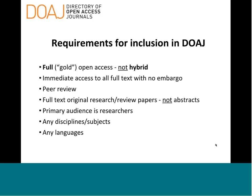We want all the content in DOAJ to be peer reviewed — as part of our drive towards ensuring quality in the system, we now require that a journal undergoes peer review. Our journals should also publish original research or review papers in full text — we don't accept abstract-only publications. The primary audience of our content is researchers, and we will review and accept journals in any disciplines and any languages.